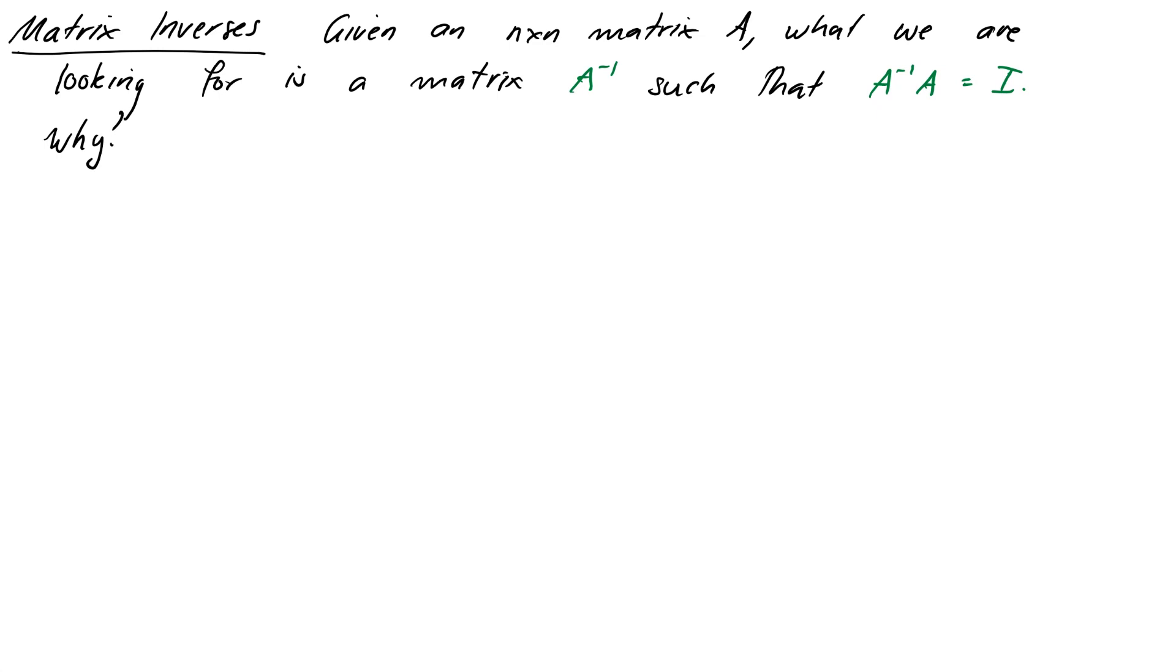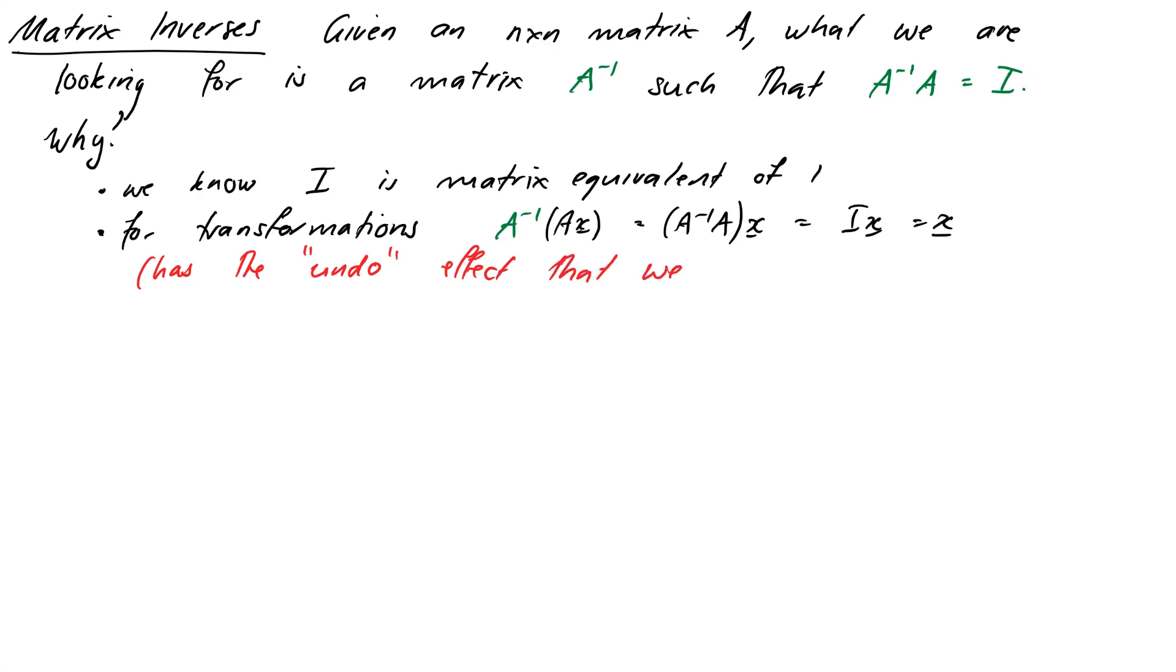Why? Well we know that I is the matrix equivalent of 1 and so if we're looking in the context of transformations if we take A inverse times our transformed vector Ax then what that will give us is I times x which will just give us x again. So if indeed we can actually find a matrix A inverse that behaves like that, that undoes A, then that will be the matrix that we're after and our end result will just be x.